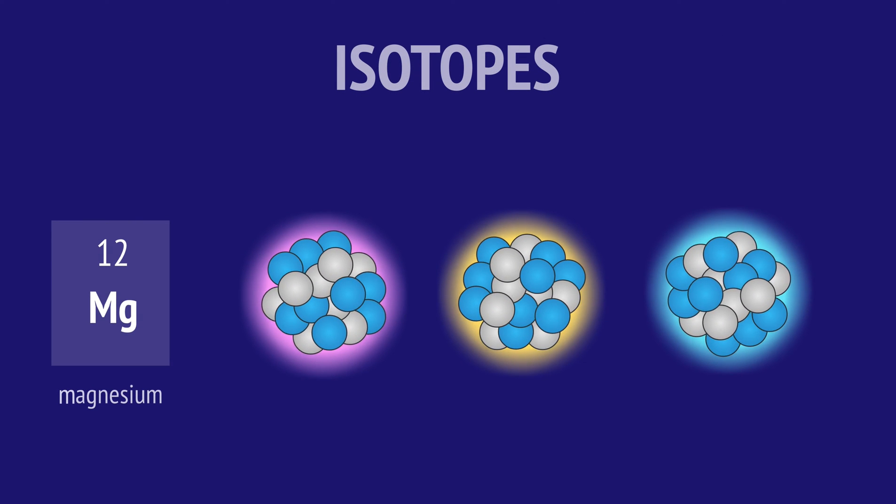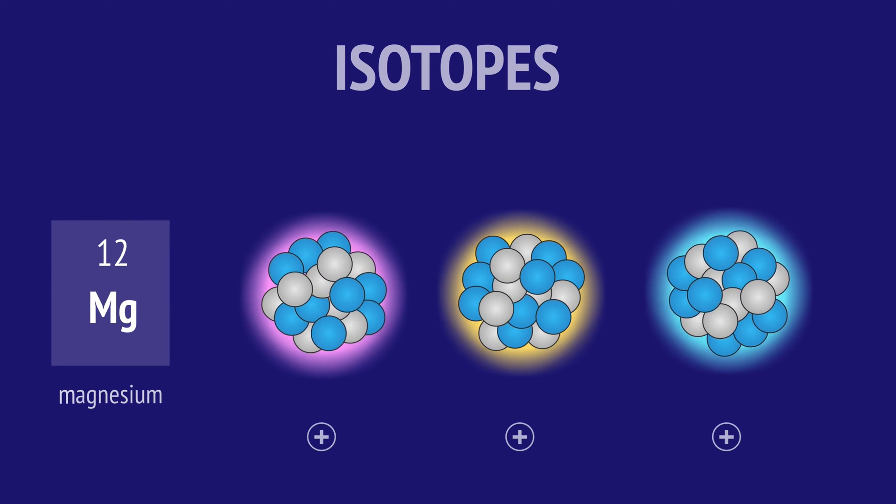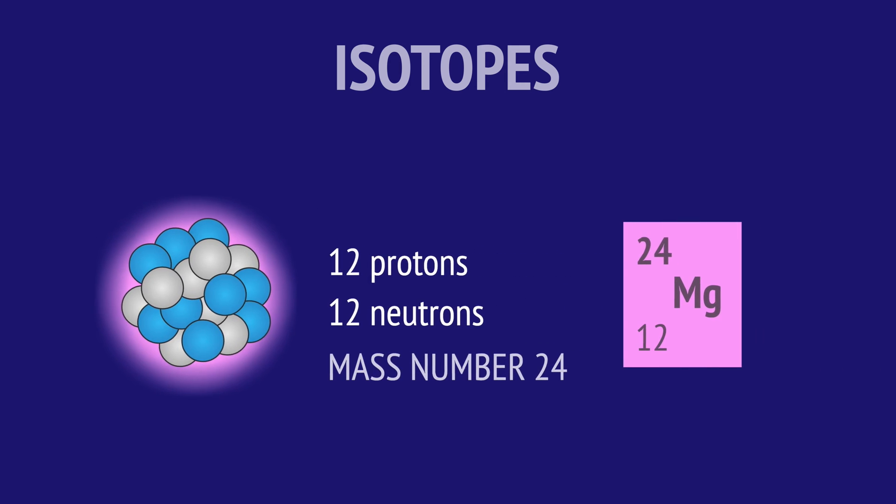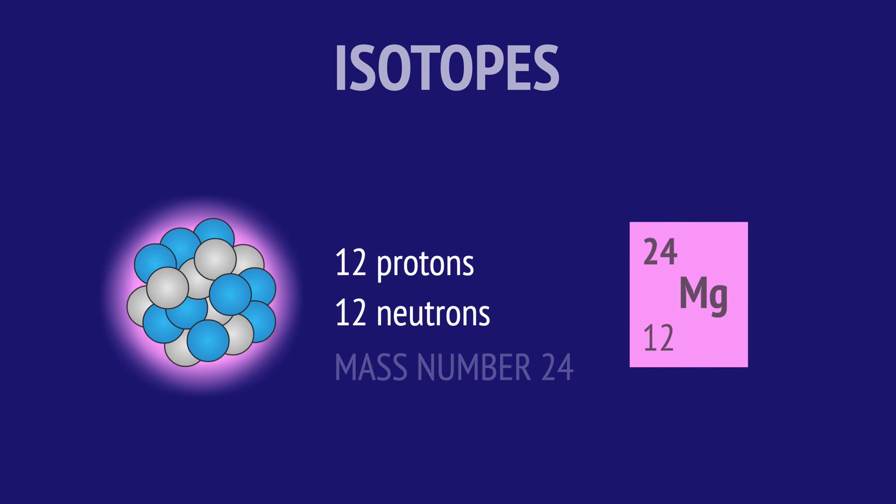Magnesium has three naturally occurring isotopes. One of these has 12 neutrons in the nucleus. When we add the 12 protons, we get a mass number of 24 and so we call it magnesium 24.